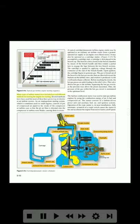Many types of turbine starters have included several different methods for turning the engine for starting. Several methods have been used but most of these have given way to electric or air turbine starters. An air impingement starting system, which is sometimes used on small engines, consists of jets of compressed air piped to the inside of the compressor or turbine case so that the jet air blast is directed onto the compressor or turbine rotor blades, causing them to rotate. A typical cartridge/pneumatic turbine engine starter may be operated as an ordinary air turbine starter from a ground-operated air supply or an engine cross-bleed source, or as a cartridge starter.